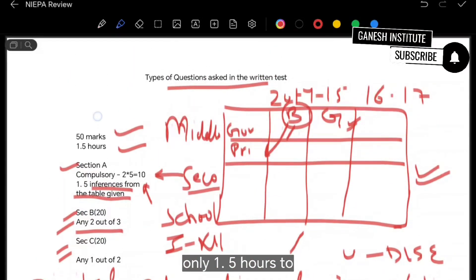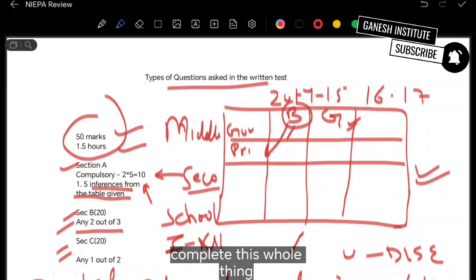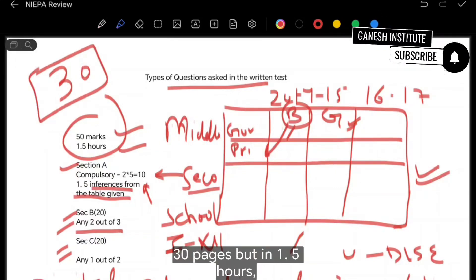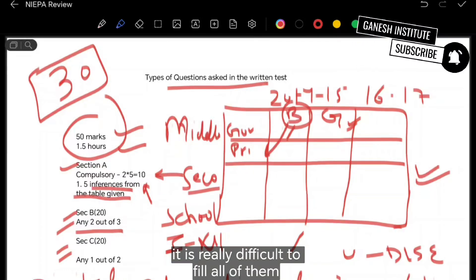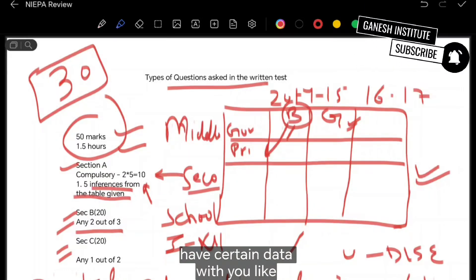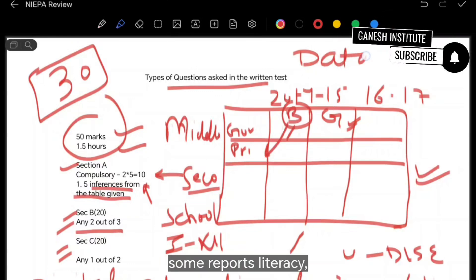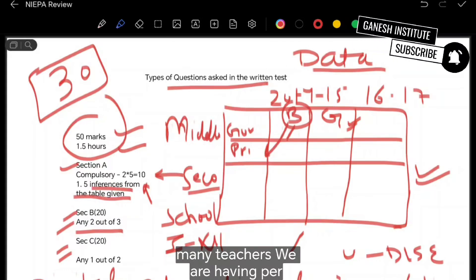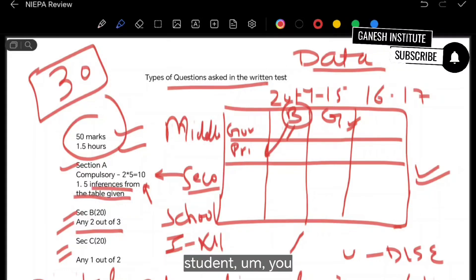And remember, you have only 1.5 hours to complete this whole thing. The answer sheet is of 30 pages, but in 1.5 hours, it is really difficult to fill all of them. And you have to write, make sure you have certain data with you, like some reports, literacy percentage, how many teachers we are having per student.